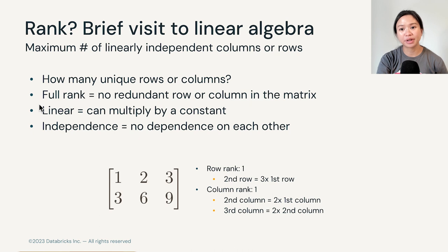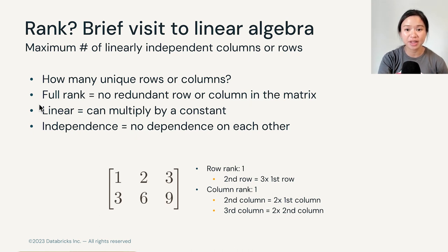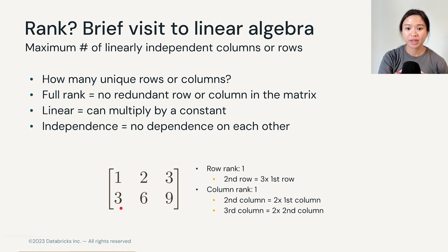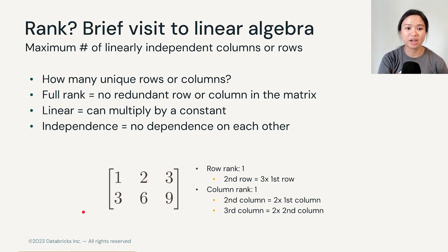Rank refers to the maximum number of linearly independent columns in a matrix. When you have a full rank matrix, it means that the matrix doesn't have any redundant rows or columns that can be expressed based on other combinations of columns. Take a look at the example: since column 2 and column 3 can be obtained by multiplying column 1 with a constant, they are not independent. Therefore the column rank is 1. The same applies to the second row, because we can get it by multiplying the first row by 3. So essentially, we are trying to represent information in a matrix without any redundancy.